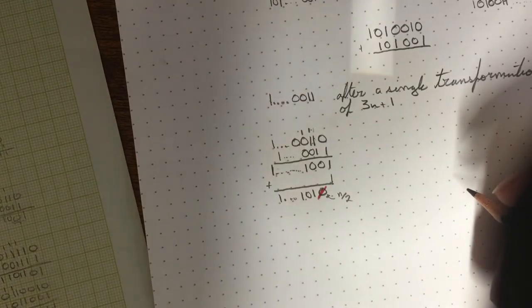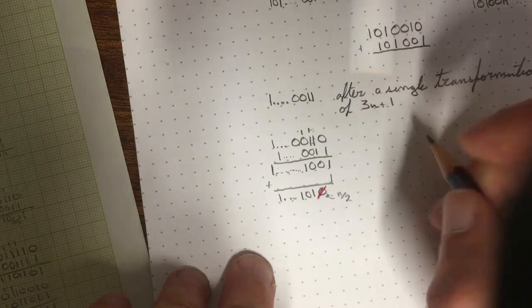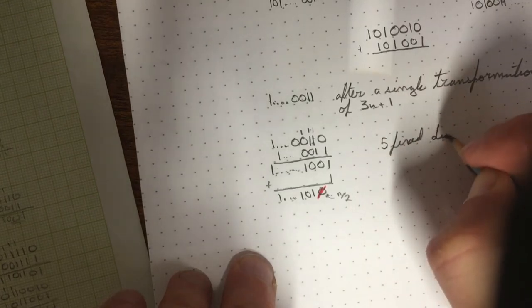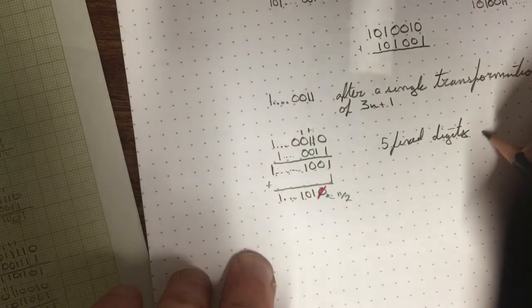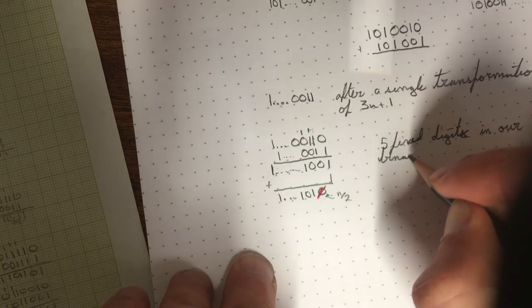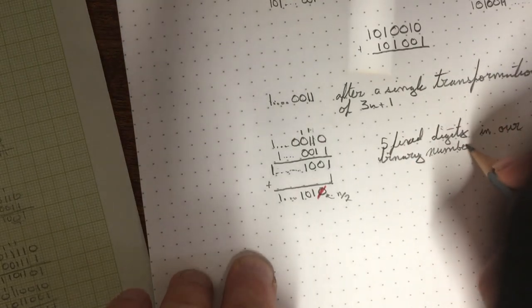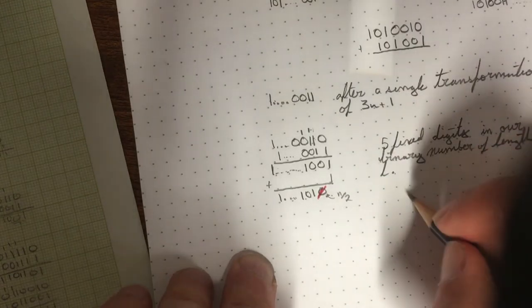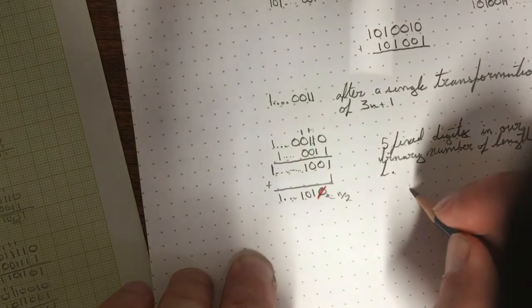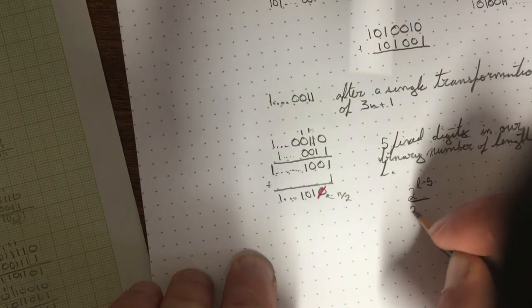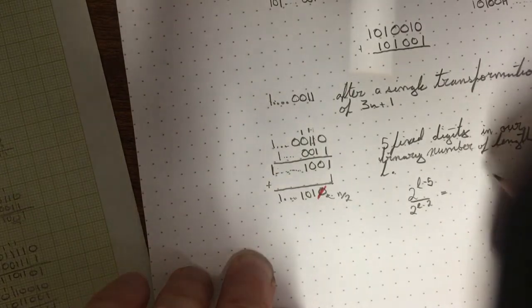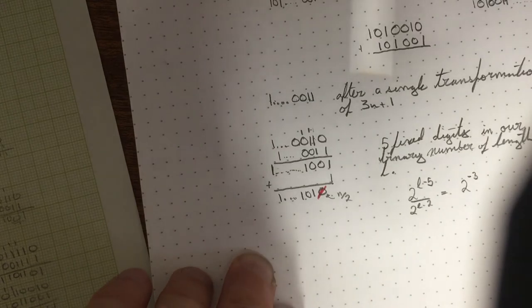If we use our little proof technique again here, we've got in this example there's one, two, three, four, five, five fixed digits in our number of length L. So if I have my odd binary number, that means I have to fix those two digits. So really I have a case like this, which gives us our two to the negative three, which is equal to one eighth.